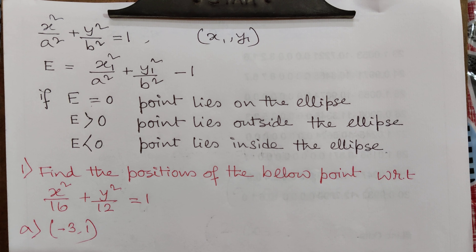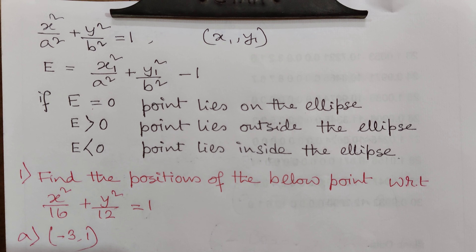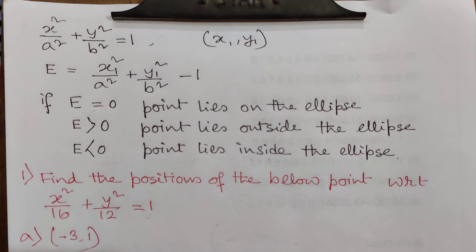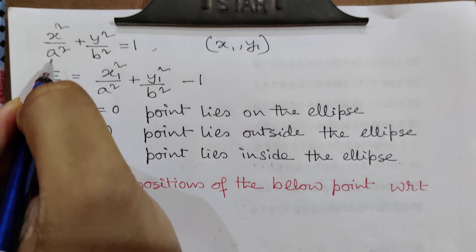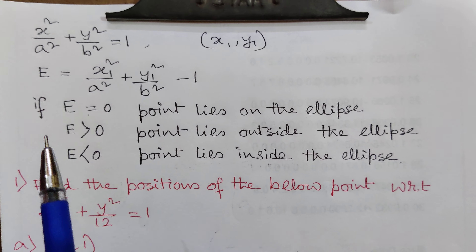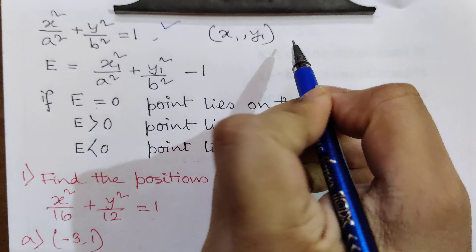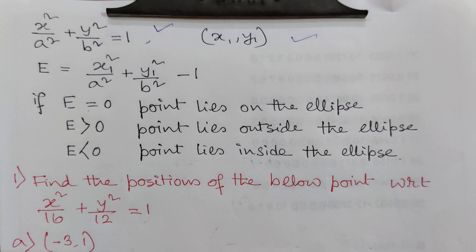In this video we will discuss the position of a point with respect to an ellipse. The ellipse equation is x squared by a squared plus y squared by b squared equal to 1, and let a point be (x1, y1) whose position is to be measured.